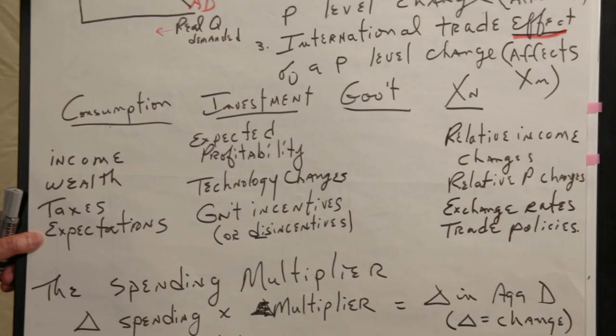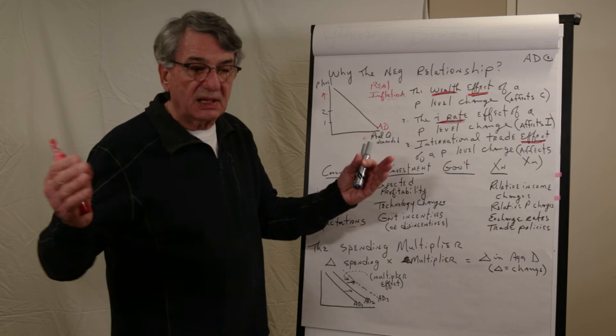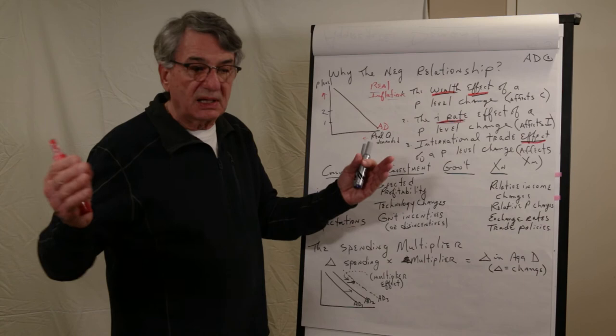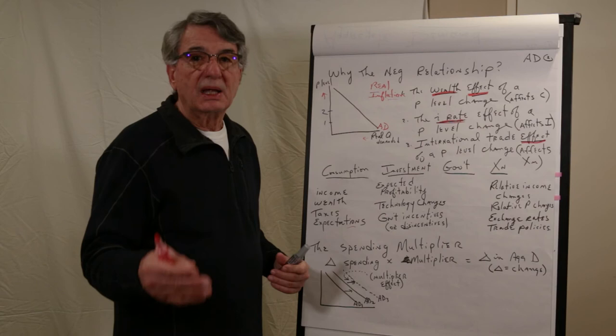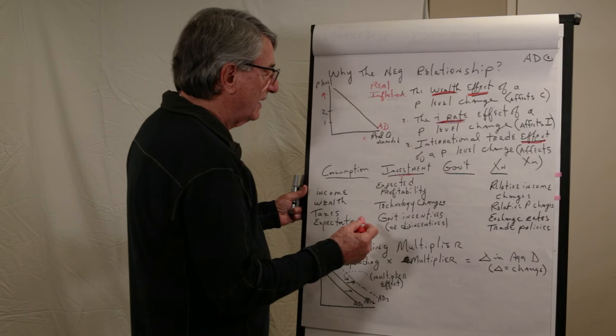...real disposable income goes up, there's more money left to spend for the typical household. And then expectations about the future. If consumers expect that the future is going to be rosy and their jobs are secure and so forth, they tend to spend more out of each income. But if they start getting nervous that they might lose their job or bad times are coming, they tend to reduce the amount that they spend out of current income every month. So that's the consumption part.